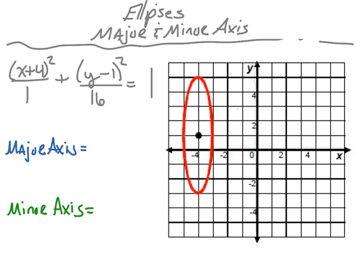Next example: the equation is (x+4)² over 1 plus (y-1)² over 16 equals 1. We're looking for both the major and minor axis. Starting with the major — the longer — we count the distance from the top point to the bottom: 1, 2, 3, 4, 5, 6, 7, 8. The major axis is 8 units. For the minor axis — the shorter — counting from one side to the other gives 1, 2 — that's 2 units. The minor axis is 2 units.